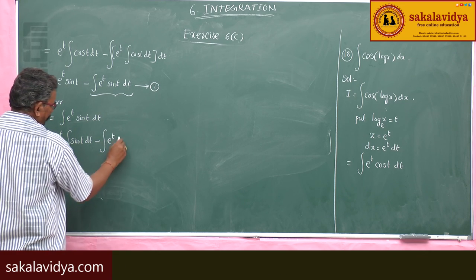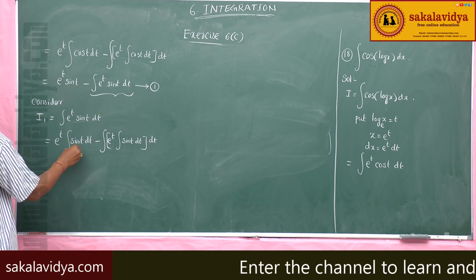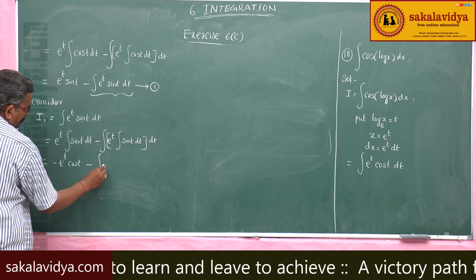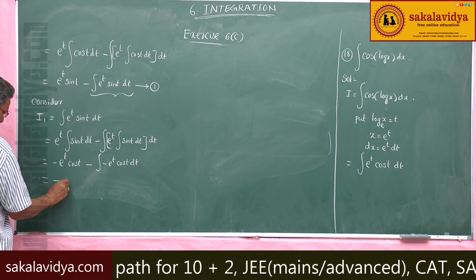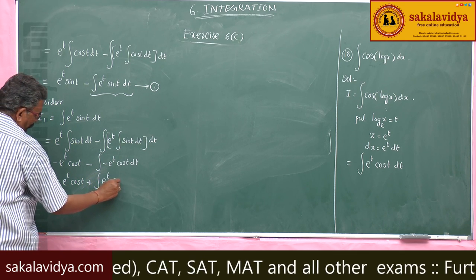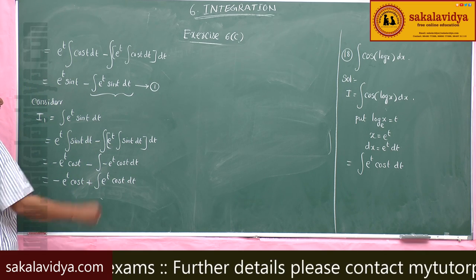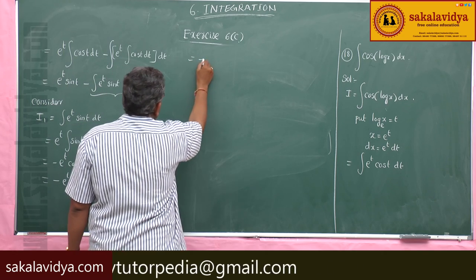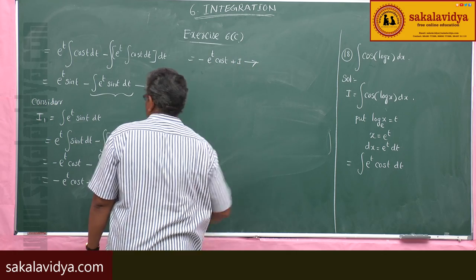For I₁, integrating e^t sin(t) dt by parts: we take the integral of sin(t), which gives −cos(t), so I₁ = −e^t cos(t) minus (−1) times the integral of e^t cos(t) dt. That last integral is I itself, so I₁ = −e^t cos(t) + I. This is equation 2.